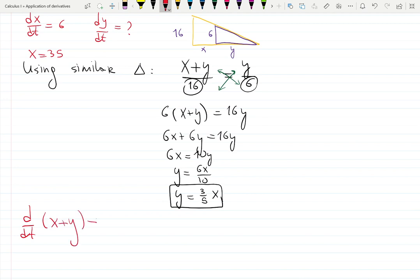So derivative with respect to t, of course, x plus y is going to be, now we can plug our y over here before we differentiate, and it's going to be derivative with respect to t, x plus three fifths x. Then we can collect the coefficients together. It's going to be 3/5 plus 5/5, that's 8/5, 8/5, and finally dx with respect to t.